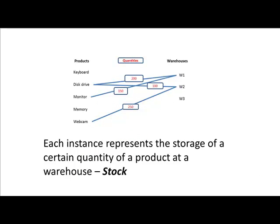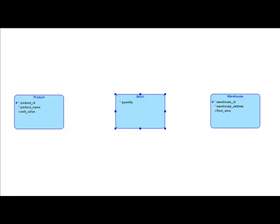Each instance — that is, each line — represents the storage of a certain quantity of a product at a certain warehouse. We can call it stock, or inventory. So now we see that between product and warehouse, we have created a new entity type called stock, and it has the attribute quantity. It would be a mistake to think of the new entity type as quantity — quantity is just an attribute. Stock may have many other attributes as well which are not obvious right now, but it could be possible.